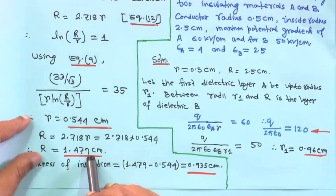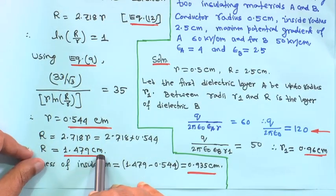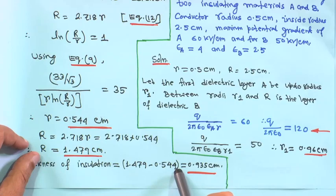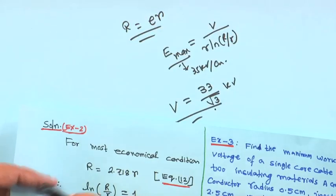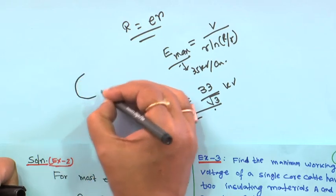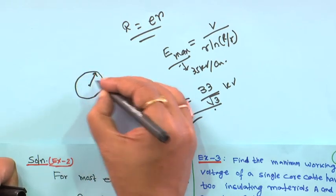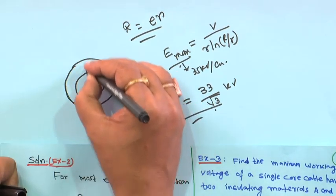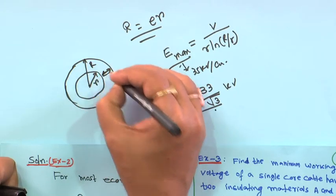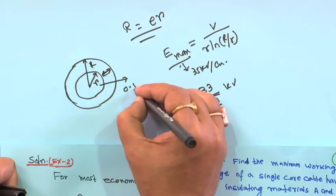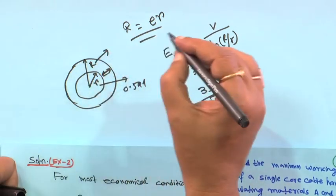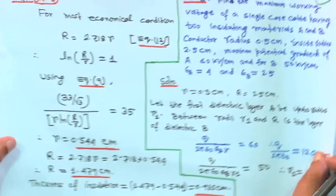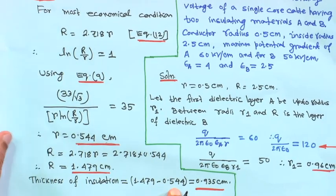Multiplying gives capital R equal to 1.479 centimeter. Therefore, the thickness of insulation is capital R minus small r, which is 1.479 minus 0.544. So insulation thickness is 0.935 centimeter. In the diagram, R is the conductor radius and capital R is the outer radius, so the insulation thickness is capital R minus small r.